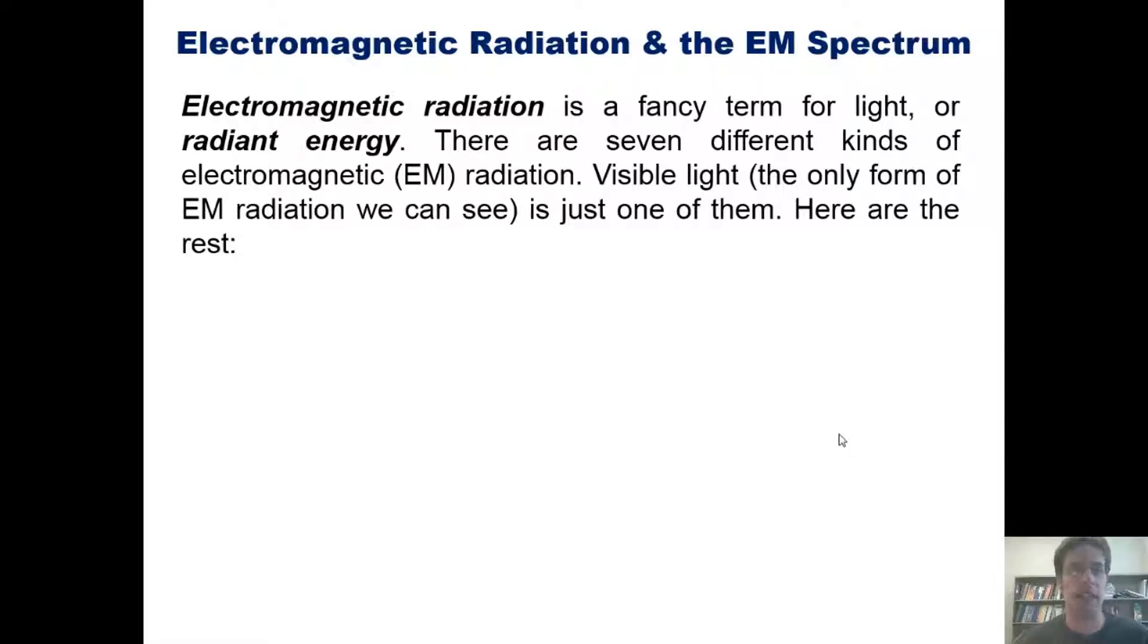Electromagnetic radiation is a fancy term for light or radiant energy. There are seven different kinds of electromagnetic or EM radiation. Visible light, which is the only form of EM radiation we can see, is just one of them.